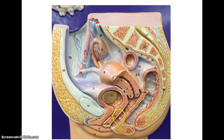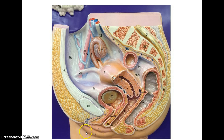Number nine is the vagina, where the endometrium will slough off on a monthly basis or the fetus will travel through as it's born. At the bottom of the vagina is number ten, the hymen. The external genitalia is called the vulva. The structures within the vulva are the clitoris, which gives the female pleasure, and the labia minora and labia majora.